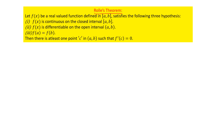Let f(x) be a real valued function defined in the closed interval [a, b]. Then the function satisfies the following three conditions. Condition one: f(x) should be continuous on the closed interval [a, b]. Condition two: f(x) should be differentiable on the open interval (a, b). Condition three: the function value at point a should equal the function value at point b, that is f(a) = f(b).